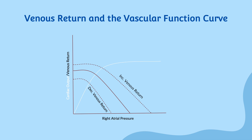On the other hand, changes in venous return can affect the vascular function curve without changing inotropy. An increase in venous return will result in a shift of the vascular function curve upward and to the right, while a decrease in venous return results in a shift of the curve downward and to the left. This means that increased venous return without an increase in inotropy will increase the right atrial pressure and therefore the stroke volume, leading to an overall increase in cardiac output. The opposite is also true: decreased venous return without a change in inotropy results in decreased cardiac output.